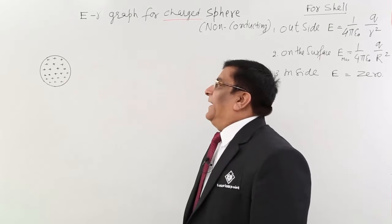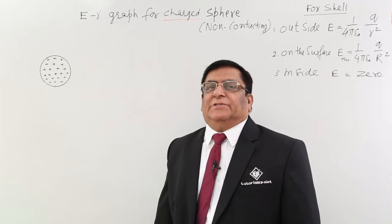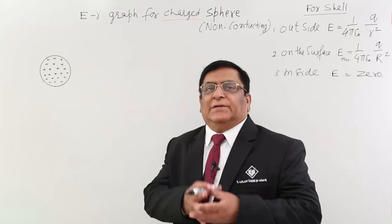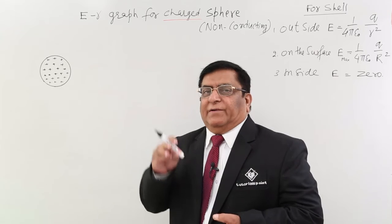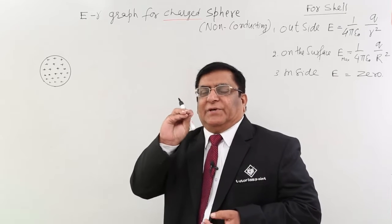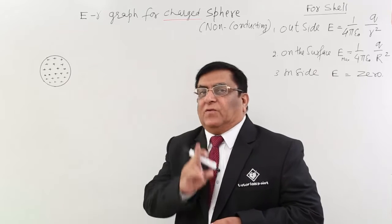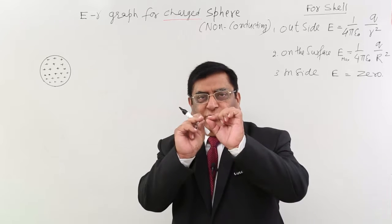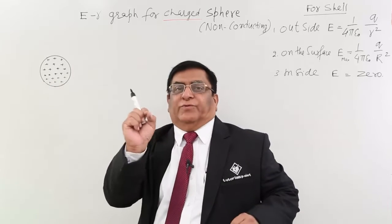Now we will study electric field due to charge distributed in a sphere. This sphere is a non-conducting sphere. So whenever the particles of the sphere get charged, the charge cannot come to the surface. Why does it want to come to surface? Due to repulsion. But the material of the sphere does not allow them to move, it is a non-conductor.